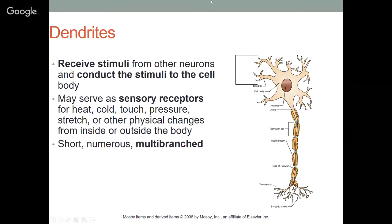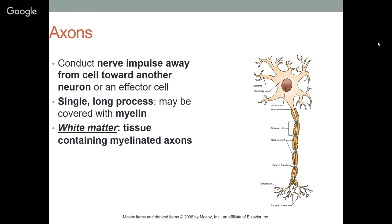Dendrites receive stimuli from other neurons and conduct them to the cell body. They serve as sensory receptors for heat, cold, touch, pressure, stretch, or other physical changes from inside or outside the body. They are short, numerous, and multi-branched. Axons conduct nerve impulses away from the cell body toward another neuron or an effector cell — a cell that affects a response. Axons are a single long process.